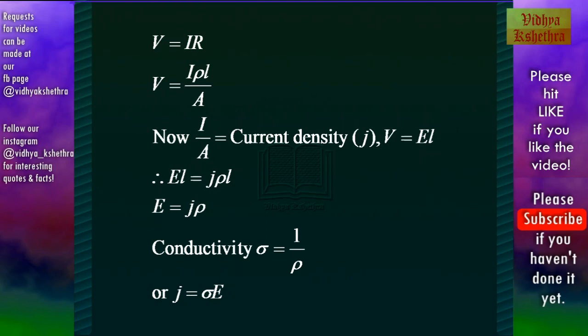Now according to Ohm's law V = IR. Now if we substitute the value of R then V = IρL/A. I/A is equal to current density J. And V which is the potential difference is equal to E × L. Therefore, EL = JρL or E = Jρ.